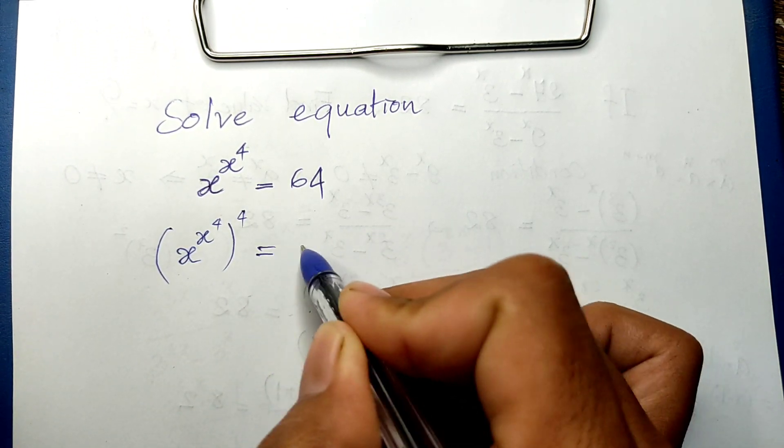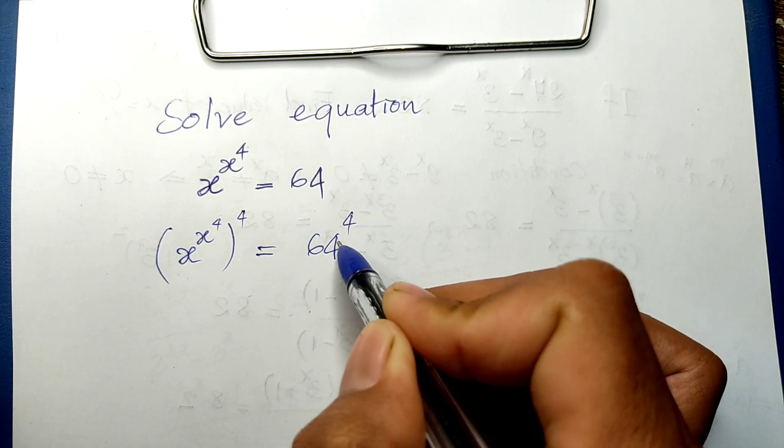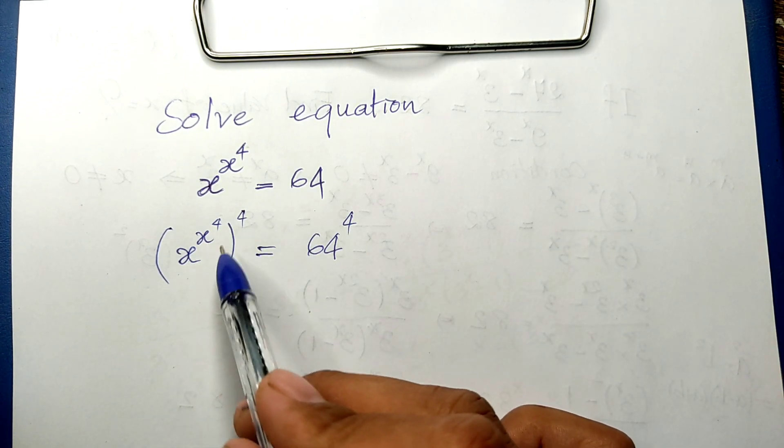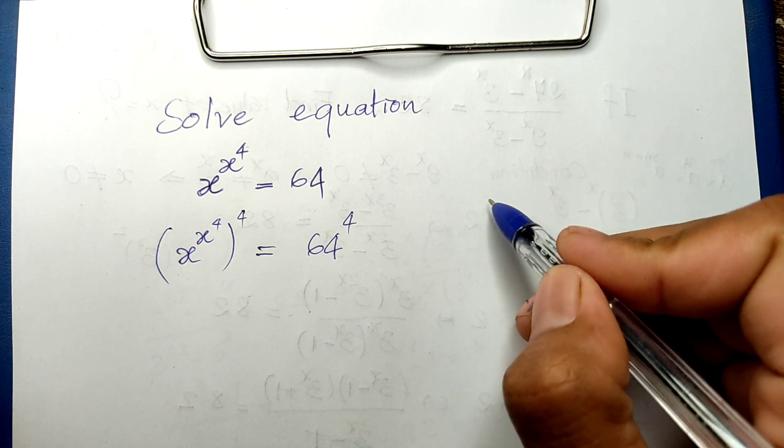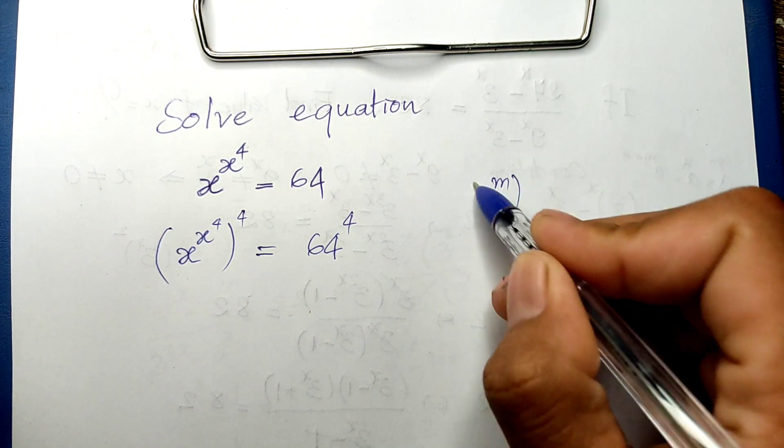This we can use the rule that we have: a to the power m, all to the power n, equals a to the power m times n.